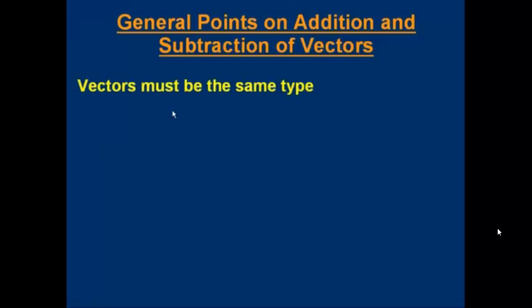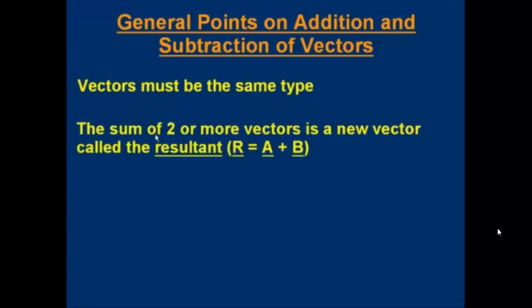Some general points first of all. If you're going to add or subtract vectors, the vectors must be the same type. You can't add a velocity vector to a force vector — you can only add a velocity vector to another velocity vector. If we add some vectors together, the sum of two or more vectors is a new vector, and it's the same type as the ones we started with. The sum is called the resultant.